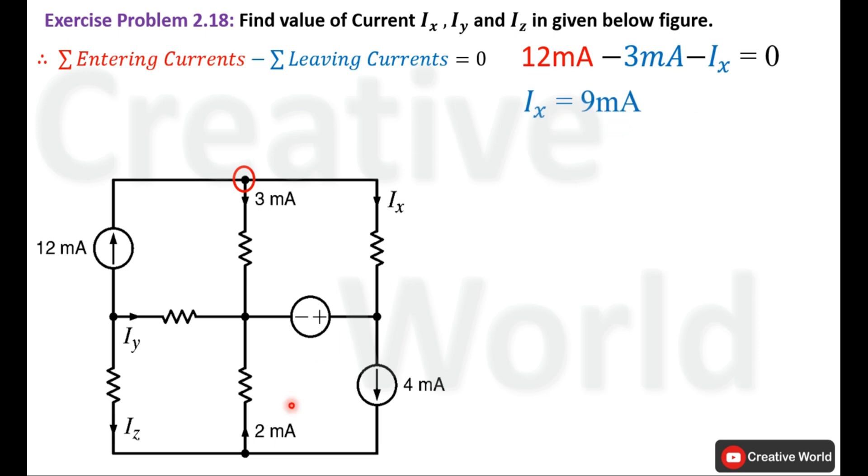Now we will move to this node. On this node, two currents are entering. One is 4 mA and the other current is labeled as Iz, and only one current is leaving, that is 2 mA.